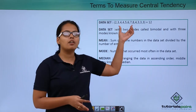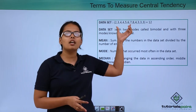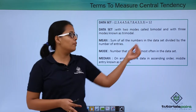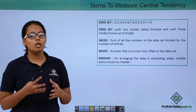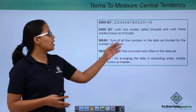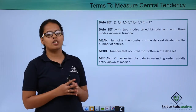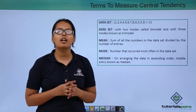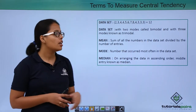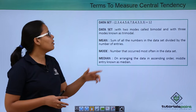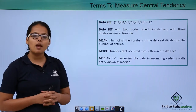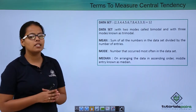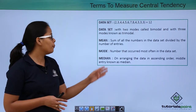In this data, the number of entries are 12. A dataset will be called bimodal if there are two modes, and if there are three modes then that data will be known as a tri-modal dataset. We'll see how to decide mode later.